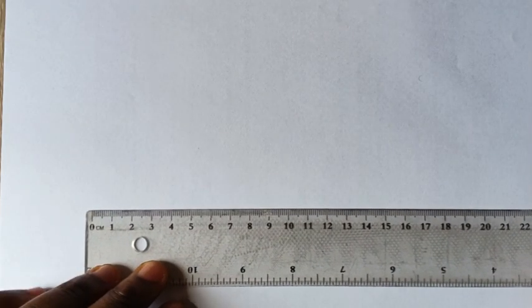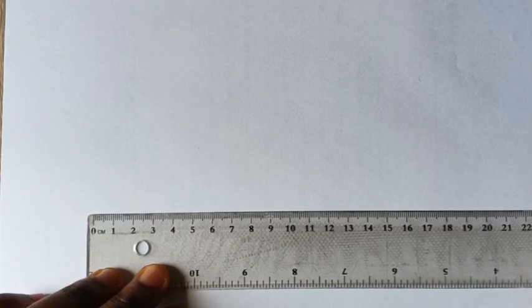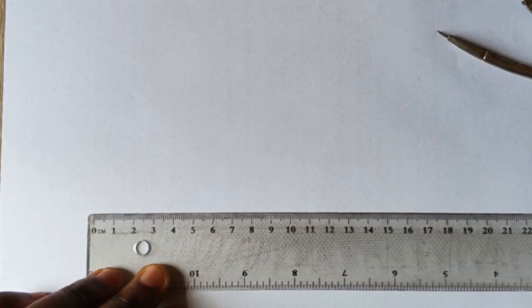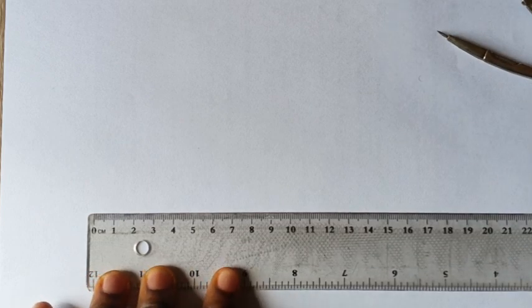Now if you want to construct a 60 degrees angle using your pair of compass, here is my pair of compass. So in order to construct that, we first of all draw a horizontal line.